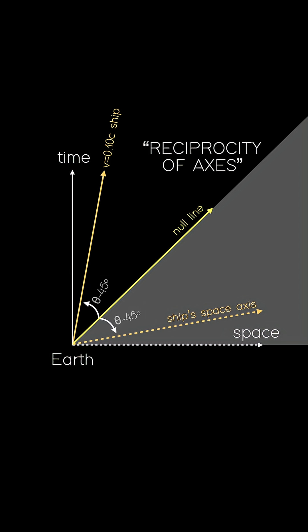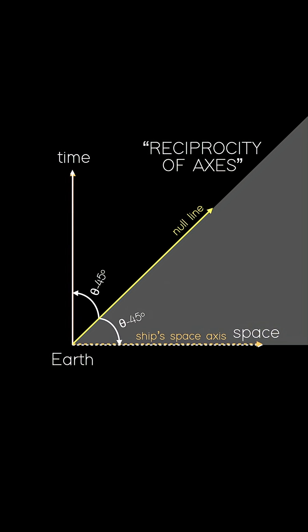This is sometimes known as the reciprocity of axes rule, and hopefully this makes sense, because as the ship slows down to zero, these axes will thus return to their same position as that of the Earth. Okay, finally, we're ready to see the paradox.